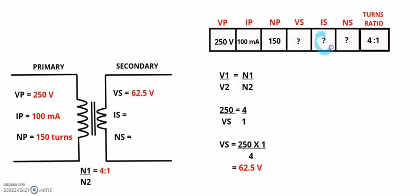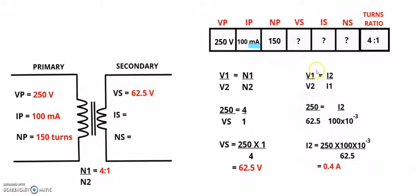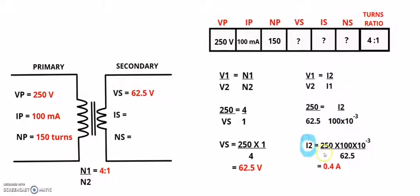The next thing we will calculate is the secondary current of this transformer. I'm going to use the voltage and current ratio: V1 over V2 equals I2 over I1. That gives 250 over 62.5, which equals I2 divided by 100 times 10 to the power of minus 3 — because the primary current is in milliamps. Making I2 the subject: I2 equals 250 multiplied by 100 times 10 to the minus 3, divided by 62.5, which gives 0.4 amps.